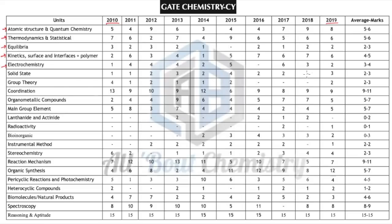From electrochemistry you can expect at least two to three questions covering three to four marks. Solid state will again give you one or two questions, so around two to three marks from here. Group theory — you can always expect a question, although in 2017 and 2018 there were no questions from group theory. It was asked again in 2019, so you can expect a question from group theory.